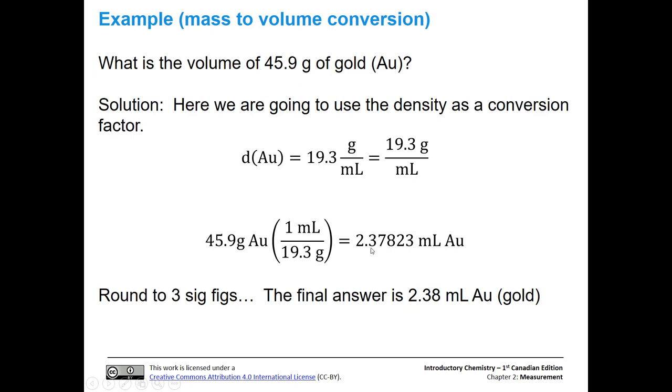We only have three sig figs in 45.9 grams of gold, so we need to limit this to three sig figs. One, two, three. The next number is eight, so we're going to round up to 2.38 milliliters of gold.